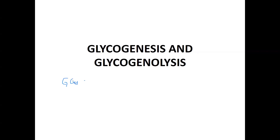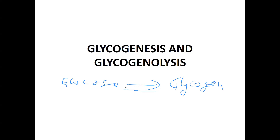When glucose molecules are converted into glycogen, the process is called glycogenesis. The reverse — when glycogen breaks down to regenerate glucose — is called glycogenolysis. This process usually takes place in the liver and the muscle cells.